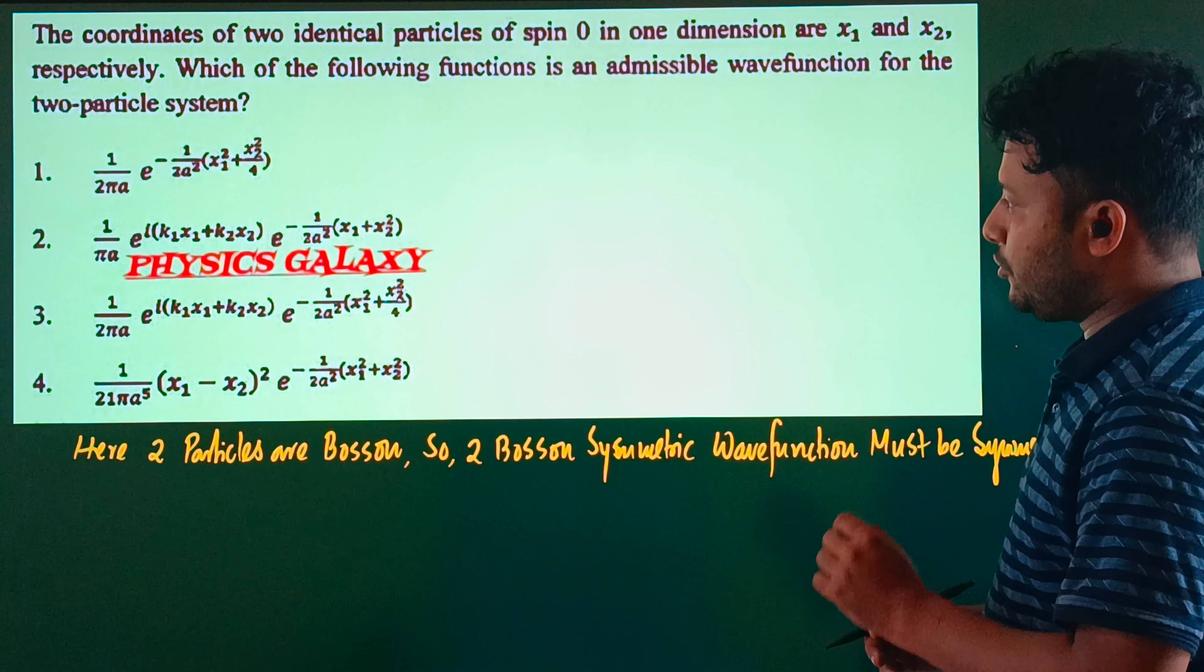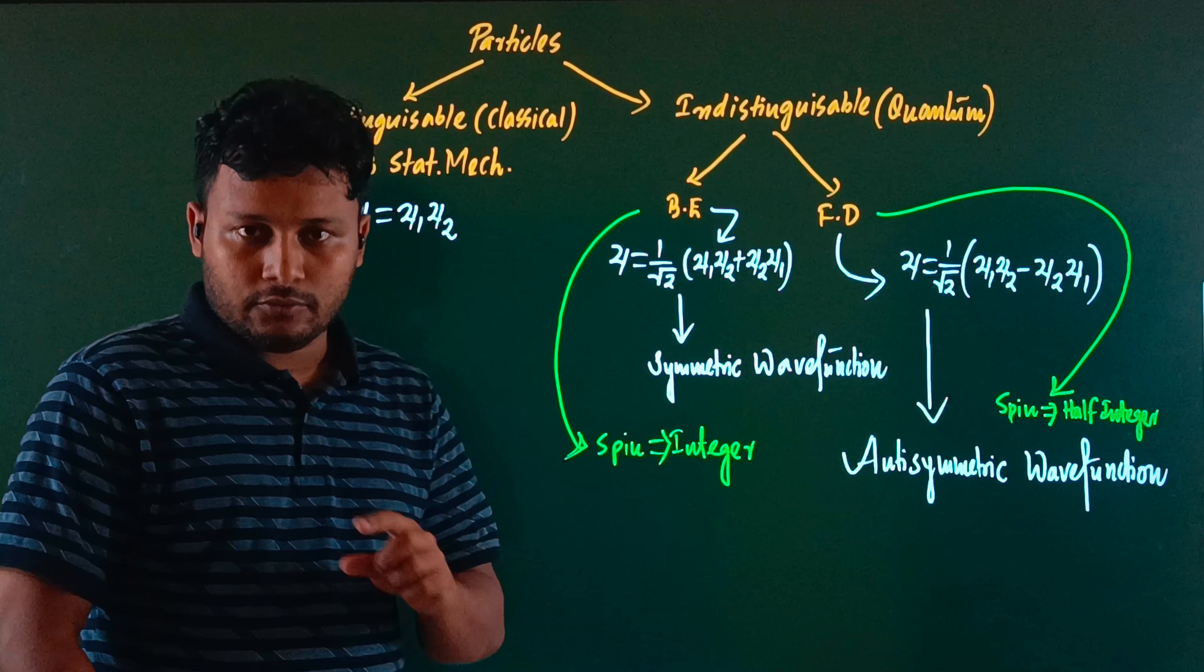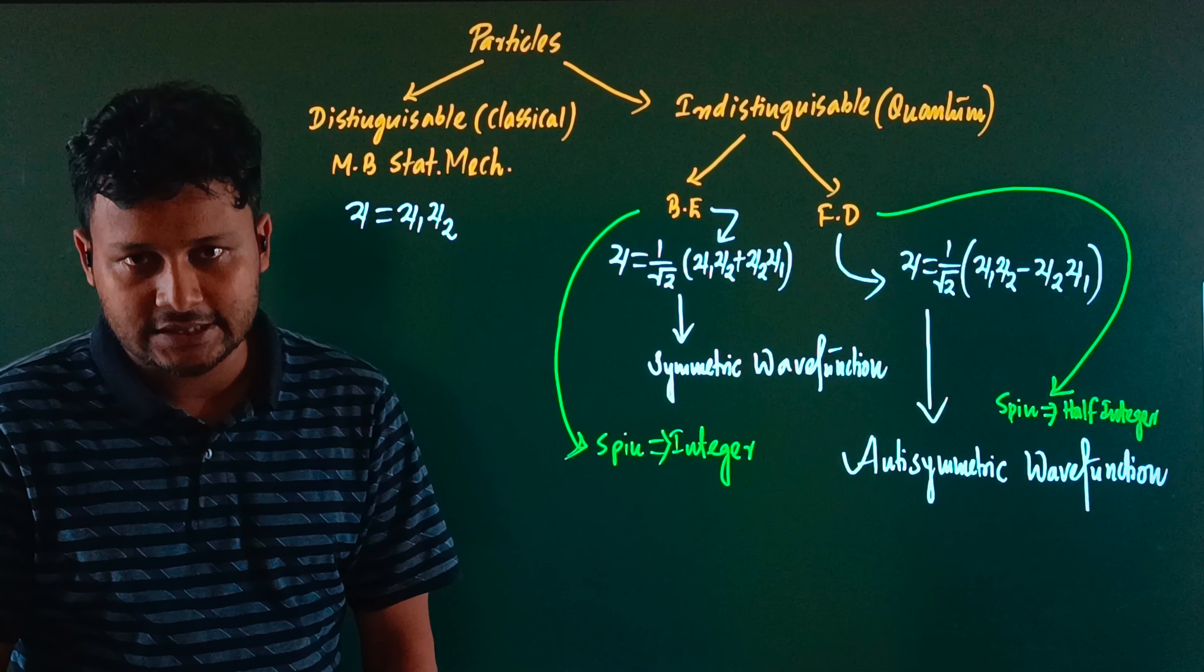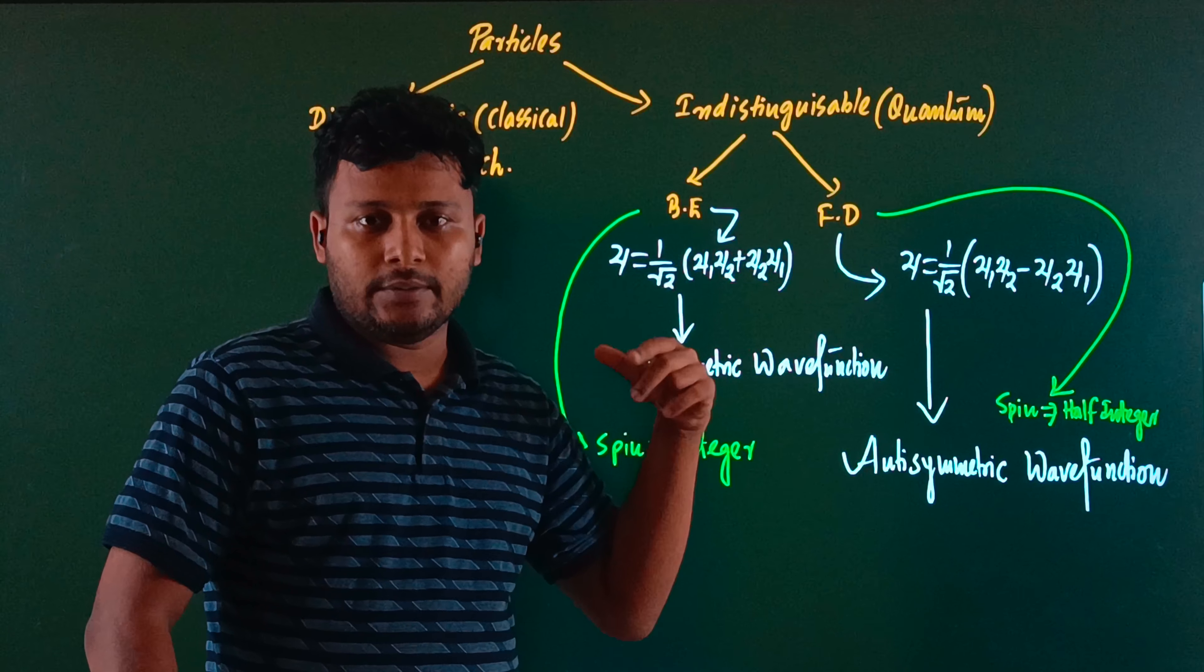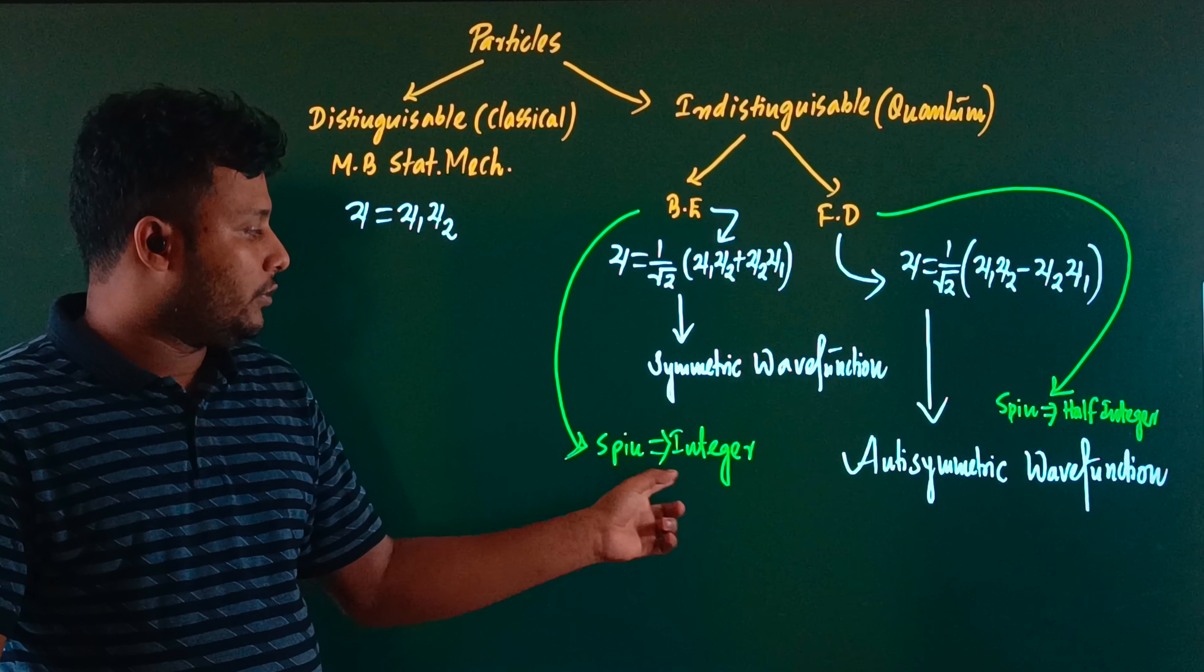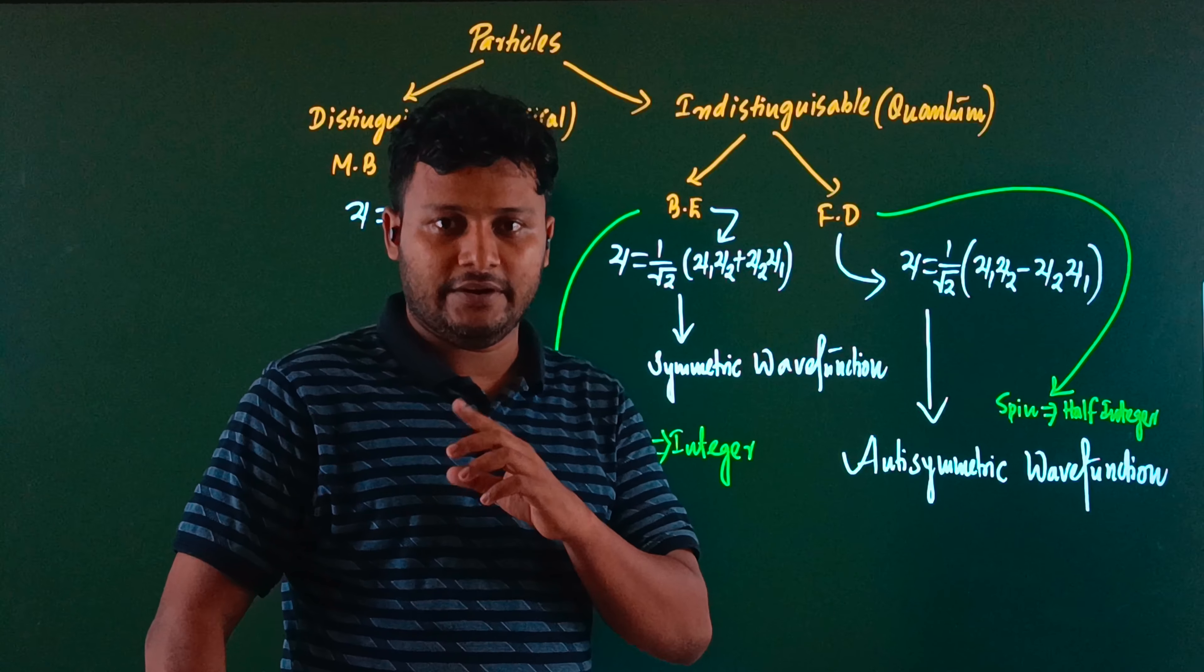First of all, particles can be distinguishable or indistinguishable. Distinguishable means classical particles, indistinguishable means quantum particles. These indistinguishable quantum particles have two types: bosons and fermions. Bosons have integer spin, fermions have half-integer spin like 1/2 or 3/2.